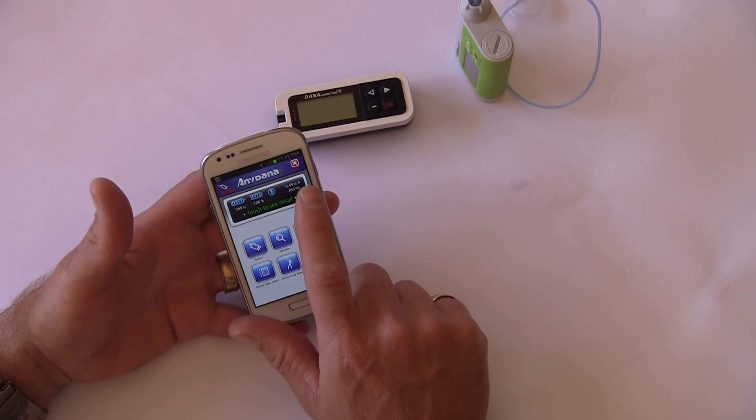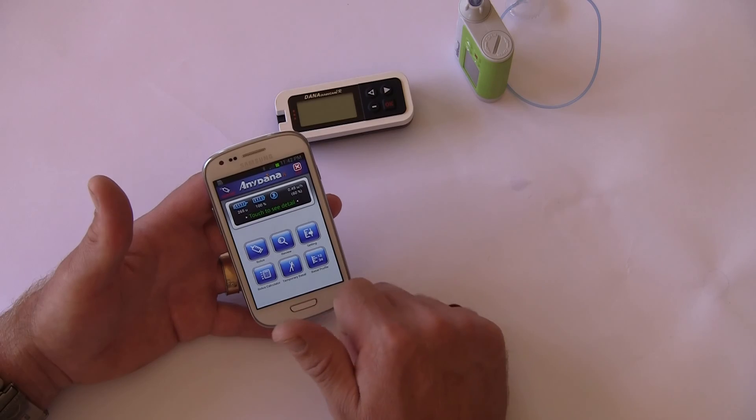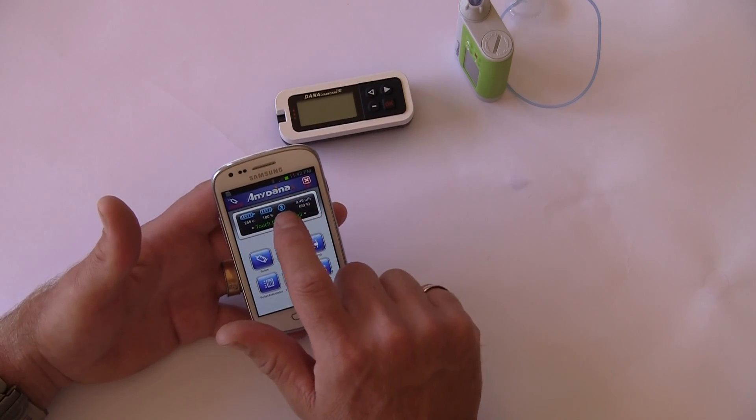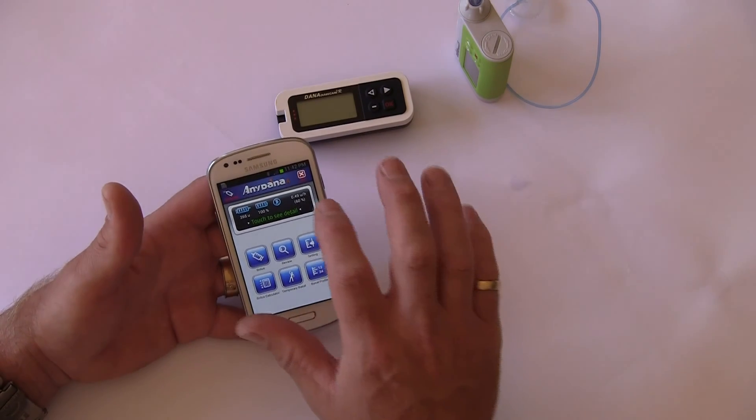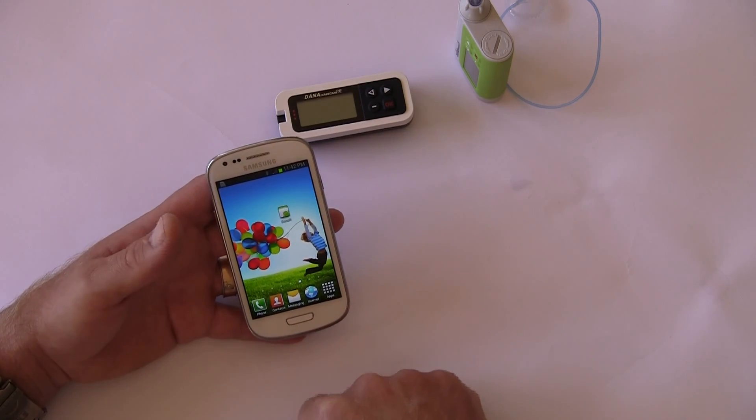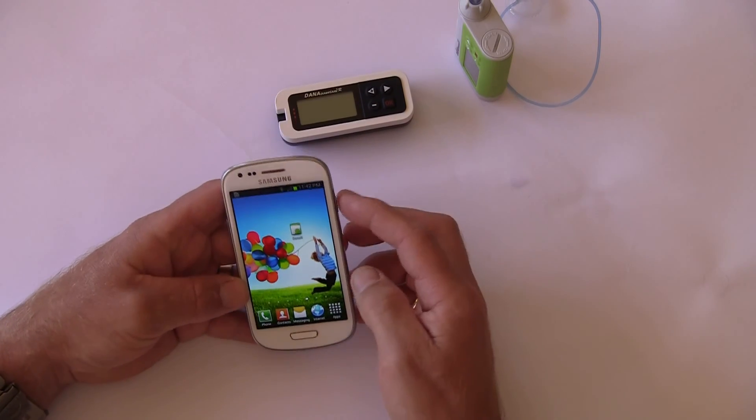It sends the message to the pump. I can now see on the front display here that the pump is no longer delivering 0.83 of a unit per hour; it's now delivering 0.49, which is 60% of its normal delivery. It's got a little symbol here showing a little man running, indicating a temporary basal rate. I can now go exit and put my phone back in my pocket. Thank you very much.